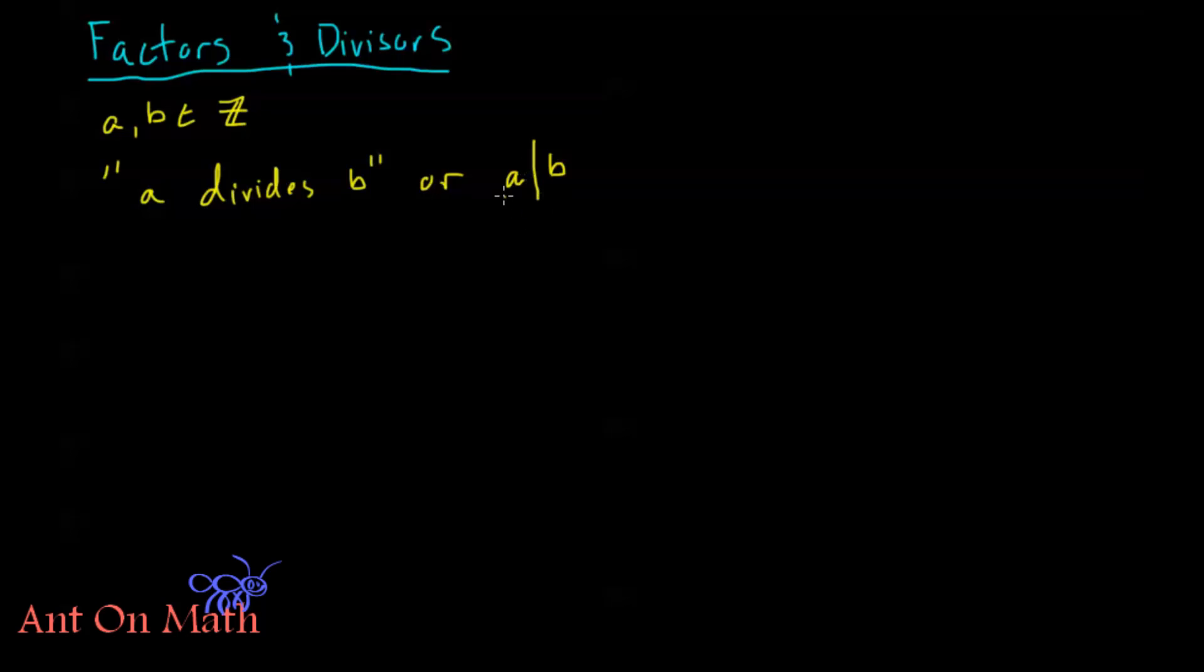Now in this context, this line doesn't mean such that. This means A divides B, and what this means when we say this, this means that there exists some C. Alright, so I'm introducing a new notation here. This means exists. Before we had the upside down A that meant for all, this means there's at least one, right?